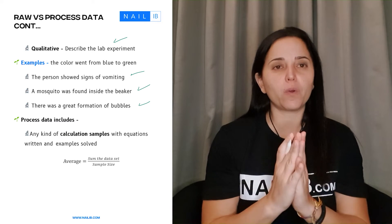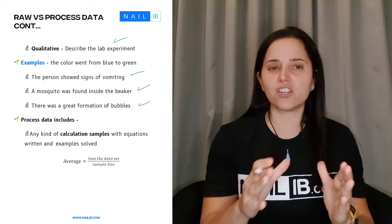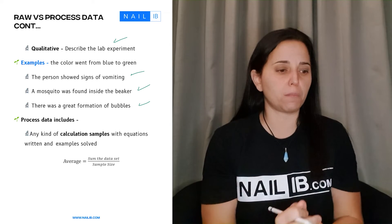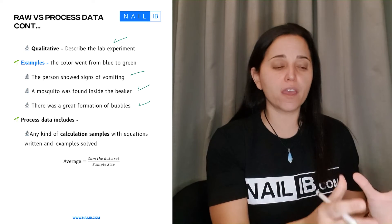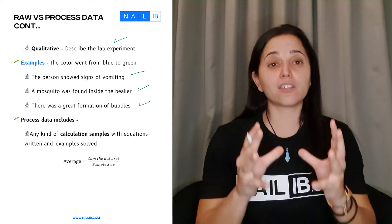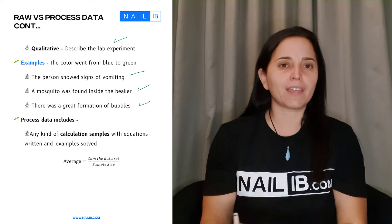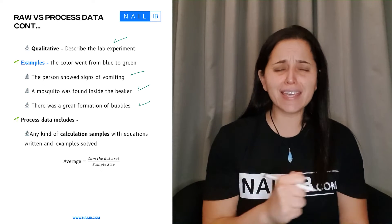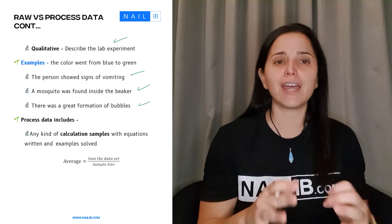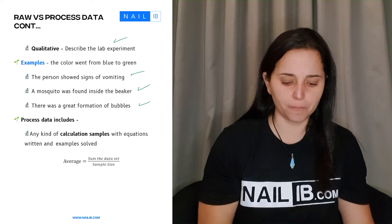Now remember that when it comes to raw data you don't have any calculations done. You just see the information and you pick it up and you put it on paper. So if you see the number of your weight on a weight scale, you take the number and put it on paper — that's the raw data. You see color blue — that's your raw data. The moment you start to do any kind of calculations, subtractions, additions, multiplications, that's not raw data anymore. Now we're talking about the processed data.